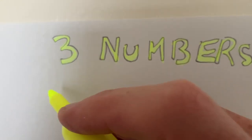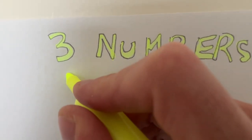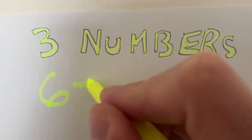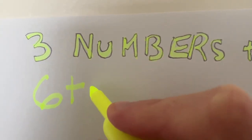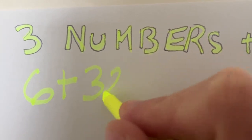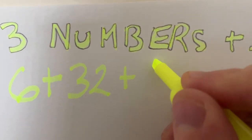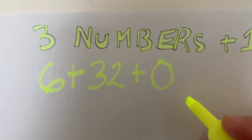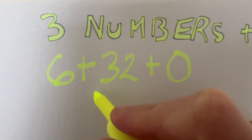So let's put six. And this is not adding, this is just adding the image. Six plus 32 plus zero. Six plus 32 plus zero.